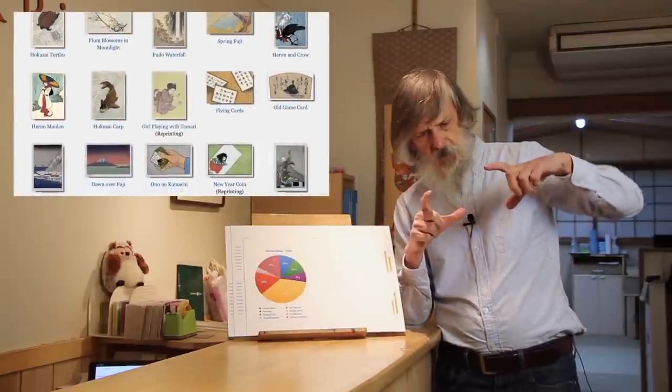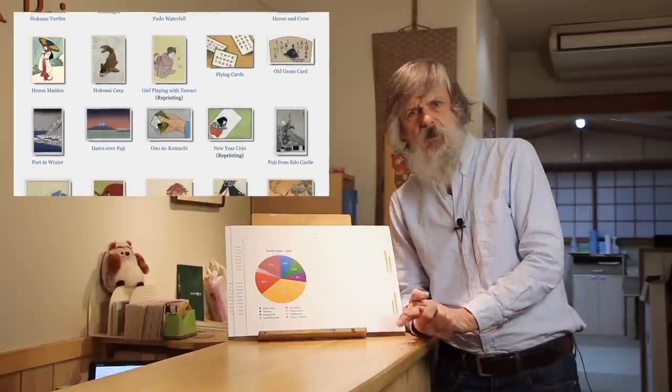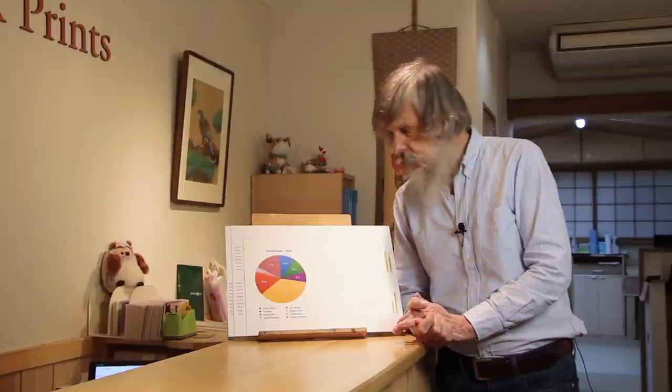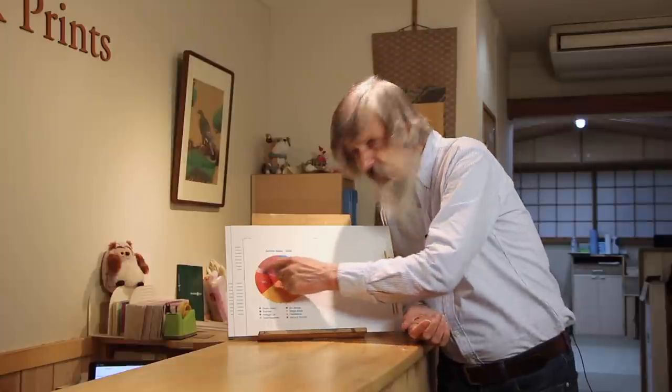The red part, these are what we call the Hanga Club prints, the ones that are about postcard size. Many people use these as gifts, and they do very well at the end of the year. This little pink smidgen, 3%, is the antique prints. This category used to do very well in the shop, but once we closed, it pretty much completely collapsed.